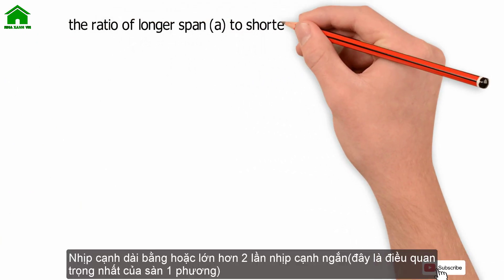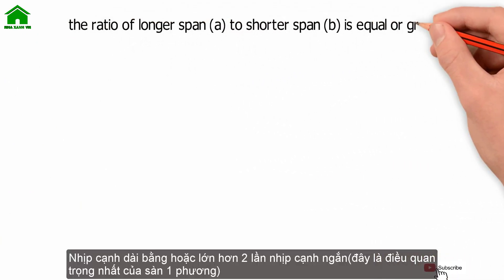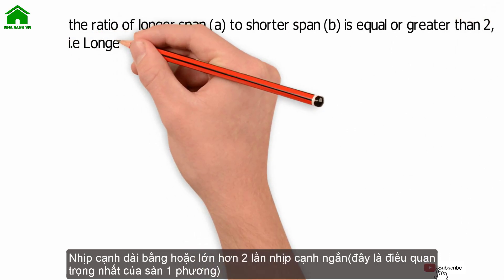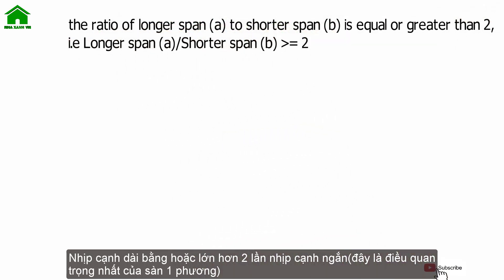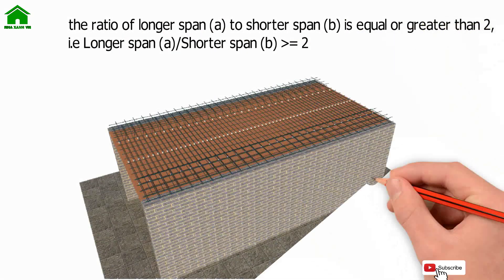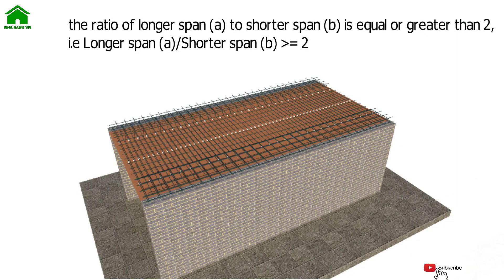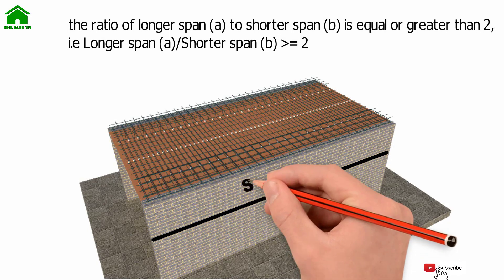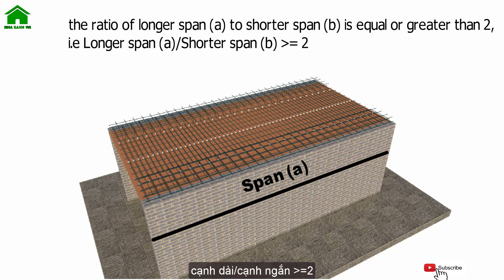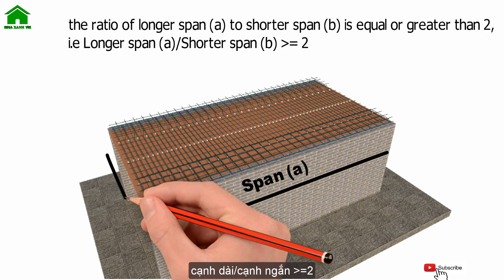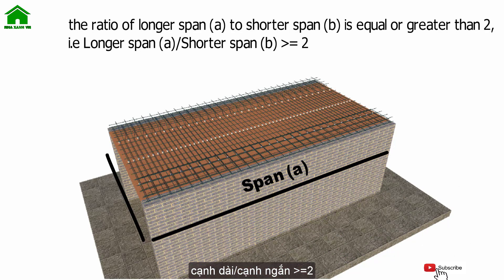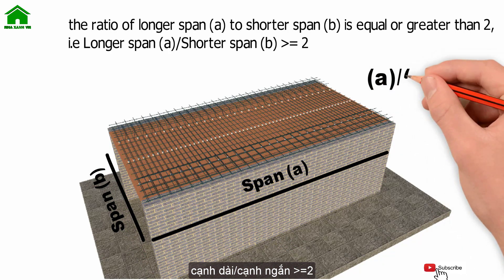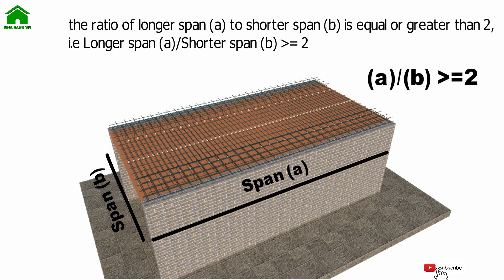The second characteristic: the ratio of longer span A to shorter span B is equal to or greater than 2. Here is the model of the one-way slab. The dimension of span A is the longer span, and span B is the shorter span. So span A divided by span B is equal to or greater than 2.